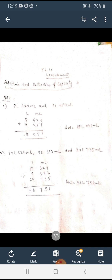And means add 9 liter 470. Normal addition as we are doing, in the same way you have to do. And we get the answer: 18 liter 41 milliliter. In the same way, next sum you have to do: 17 liter 624, then 9 liter 392, and 29 735. In the same way we got answer 56 liter 751 milliliter.